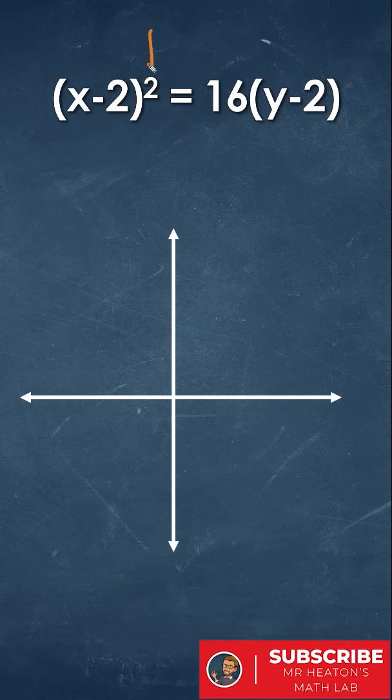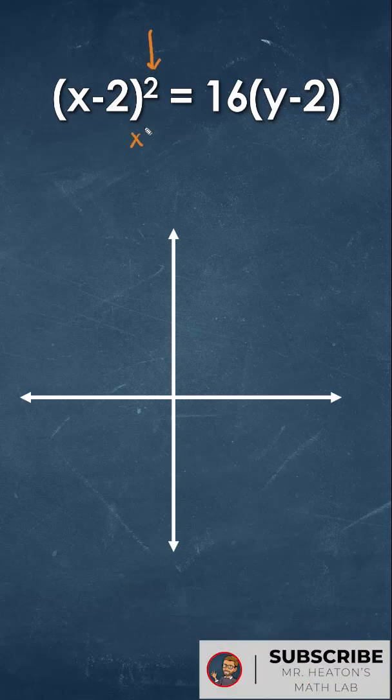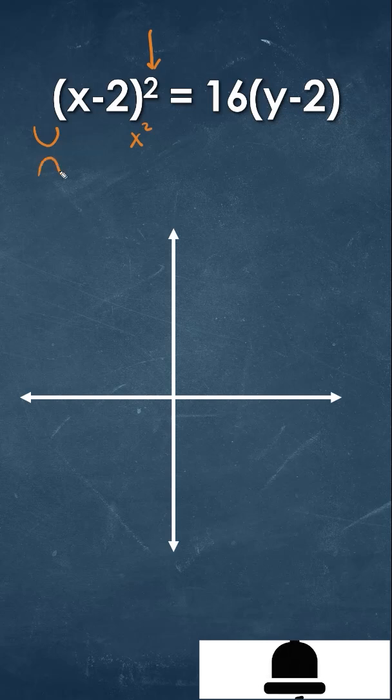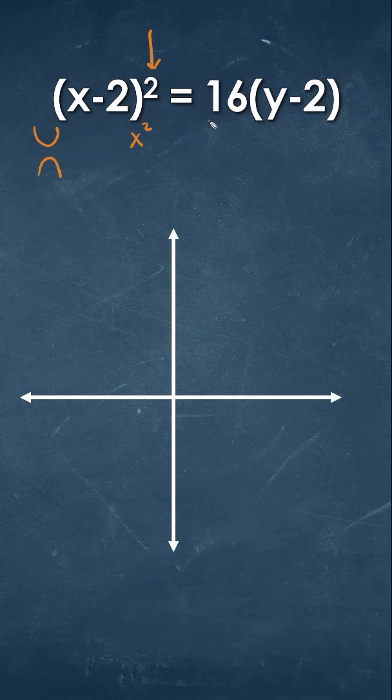When you're graphing parabolas, the first thing you want to do is figure out where that squared value is going to be. Since it's with x, it'll tell us that it'll either be a positive upward shape or downward shape.